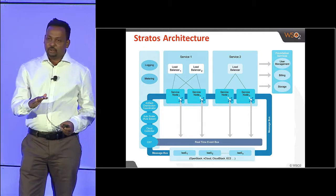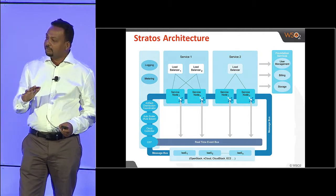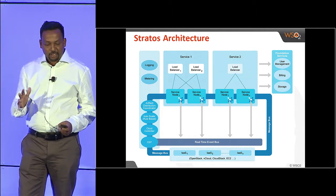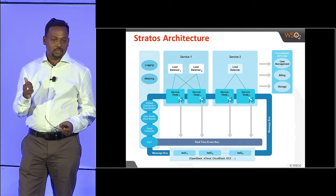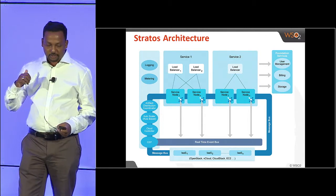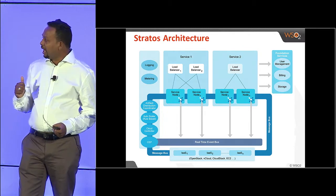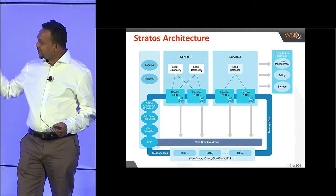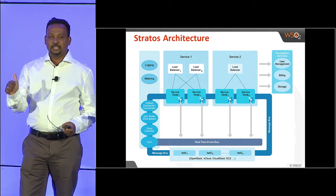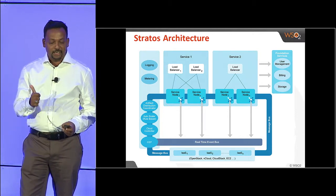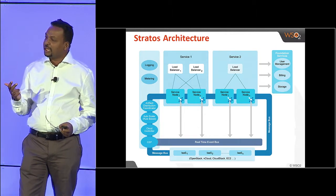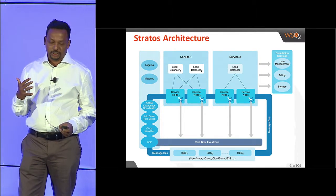At the bottom-most layer, you have multiple infrastructure clouds. Apache Stratos is capable of dealing with multiple clouds such as CloudStack, EC2, or whatever you would like to use. On the left-hand side of the screen, you'll see the Stratos controller, which deals with things such as auto-scaling, artifact distribution, cloud controlling, and it also has a complex event processing engine.